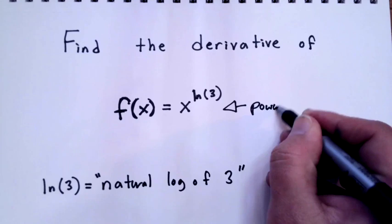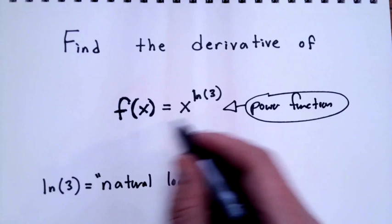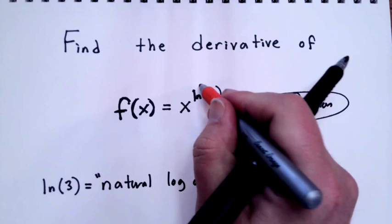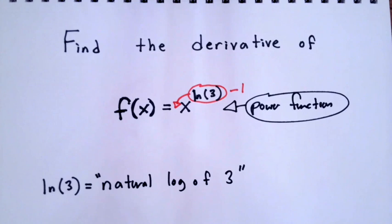This is an example of a power function and we're not going to do anything different than we would with any other power function. It's still going to be the case that we bring down this constant and then subtract 1 from the power.